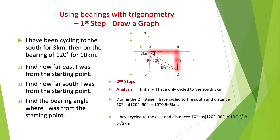Let's look at a question. I have been cycling to the south for 3 km, then on the bearing of 120 degrees for 10 km. Question 1: Find how far east I was from the starting point. Question 2: Find how far south I was from the starting point. Question 3: Find the bearing angle where I was from the starting point.